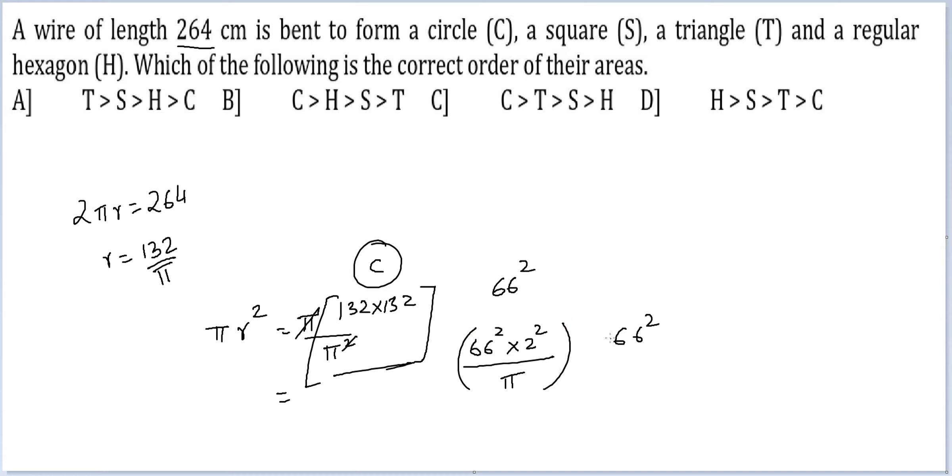This expression will be greater than this expression. You can figure this out. So all the options in which circle comes after square will get rejected. We are now left with these two options.